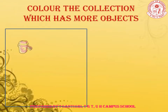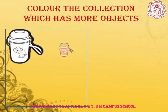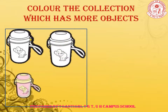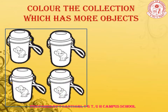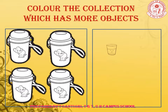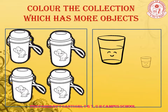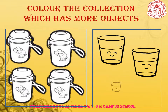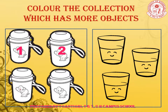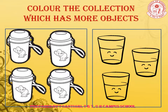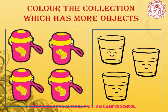Color the collection which has more objects. Children, here we have given two groups. In one group we have water bottles and in another group we have glasses. We need to find out which group is having more objects. Let us count: water bottles — 1, 2, 3, 4. Here we have 4 water bottles. And glasses — 1, 2, 3. We have 3 glasses. Clearly, 4 is greater than 3, so the first group, water bottles, is having more objects. So, color the water bottles.